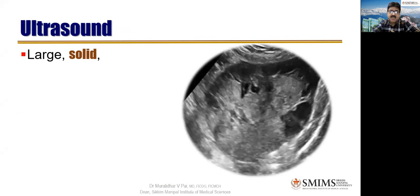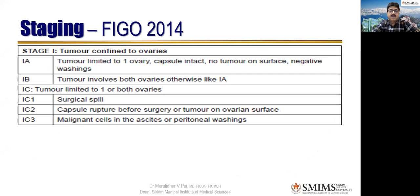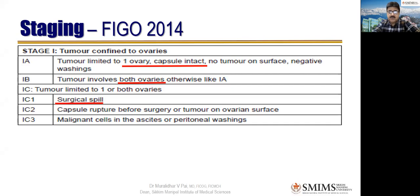Ultrasonically, they are large and solid, sometimes bilateral, with lobulated adnexal mass with irregular internal echogenicity. Highly vascularized and low resistance on Doppler. Staging follows FIGO 2014. Stage 1: tumor confined to ovaries. 1A — one ovary, capsule intact. 1B — both ovaries. 1C — one or both ovaries with spill. C1 is surgical spill, C2 is natural spill before opening, and C3 is ascites already present.